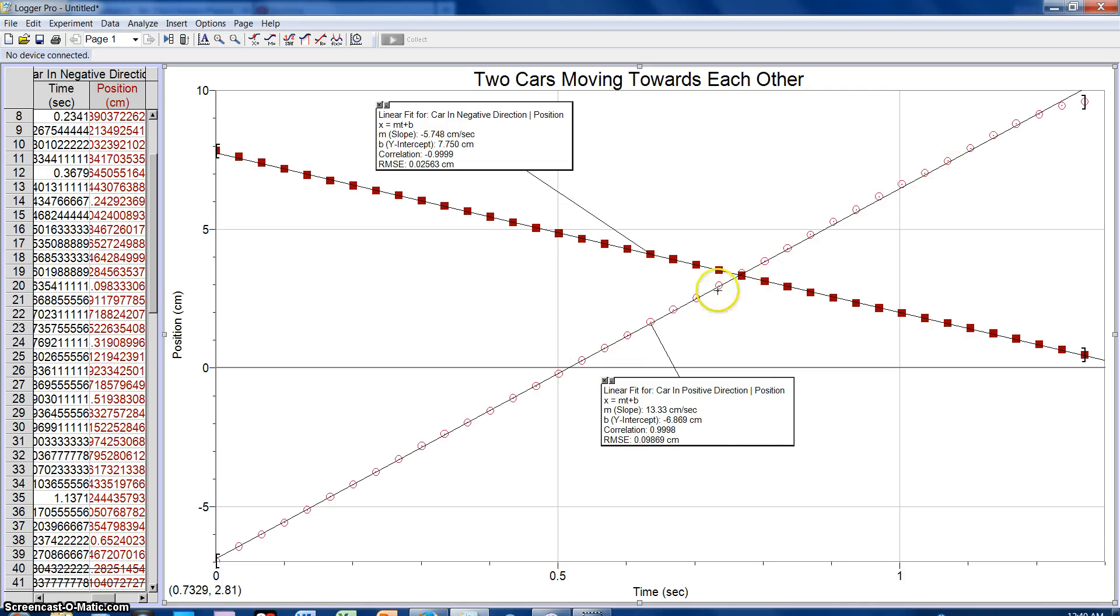And the positive car went in a positive direction and the car in a negative direction went in a negative direction, but they crossed at this point right here, which is approximately 0.8 seconds, approximately.